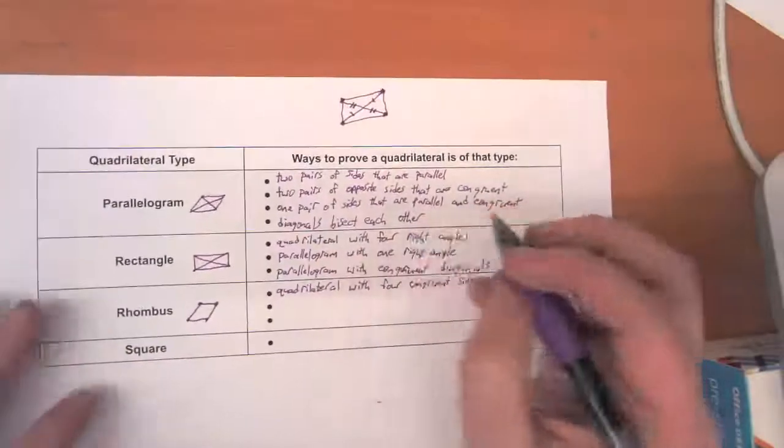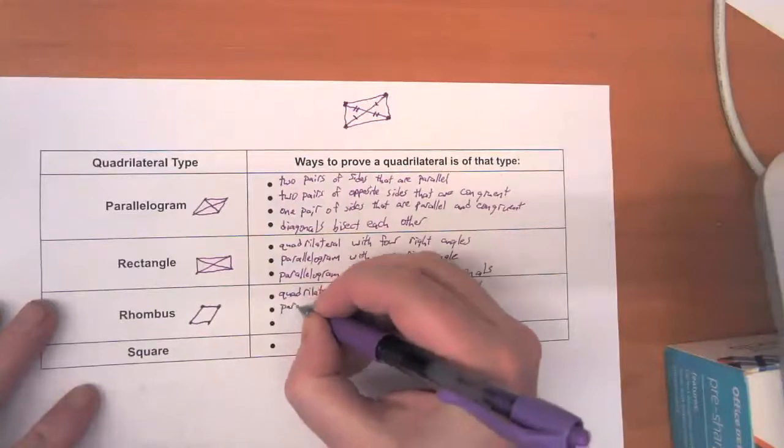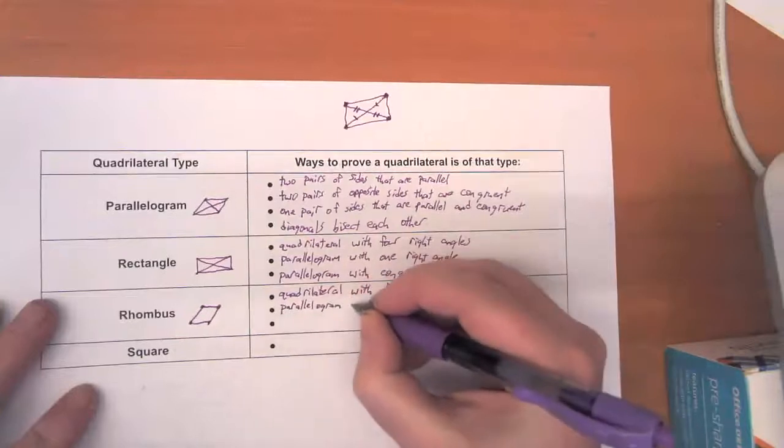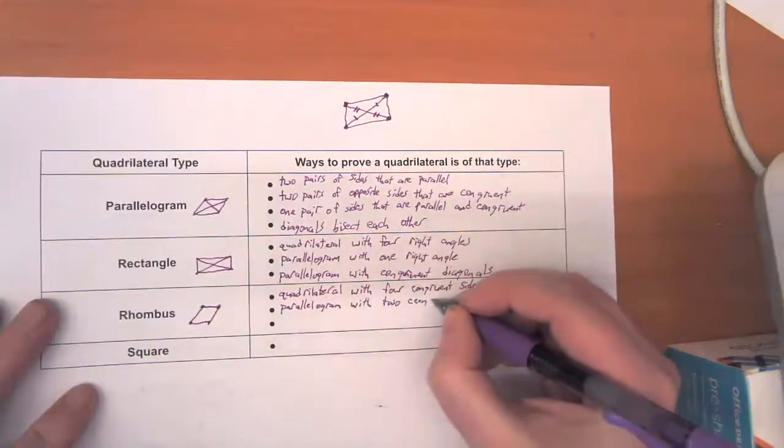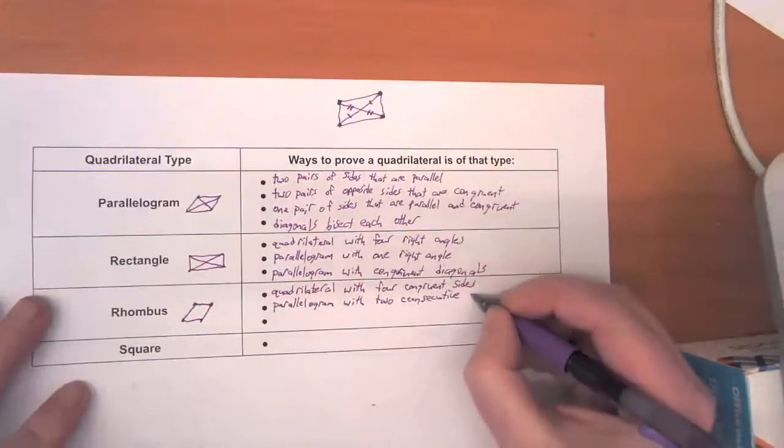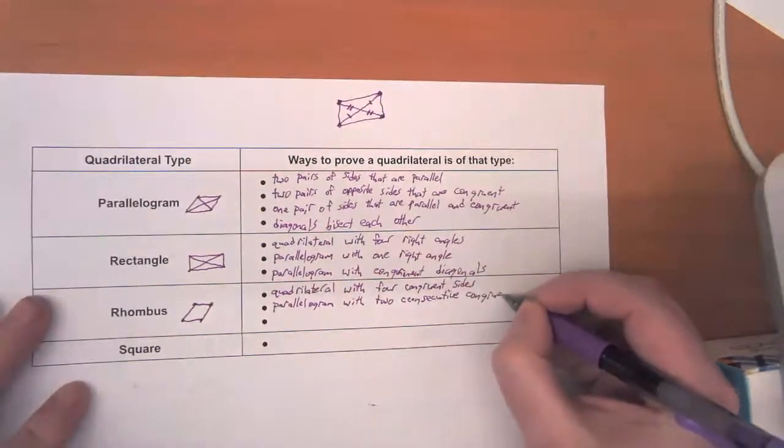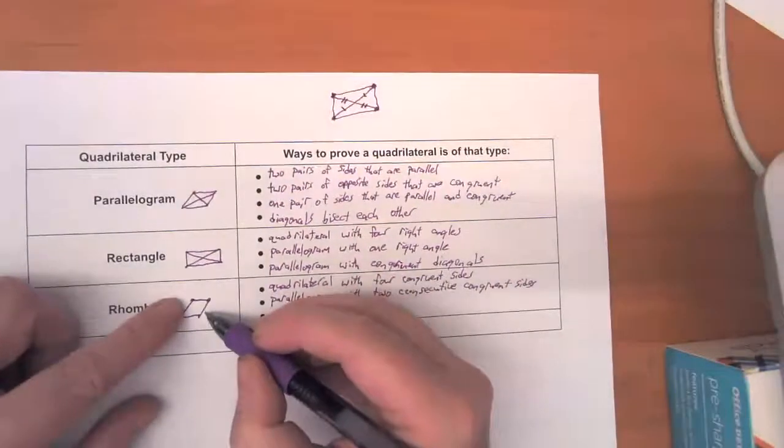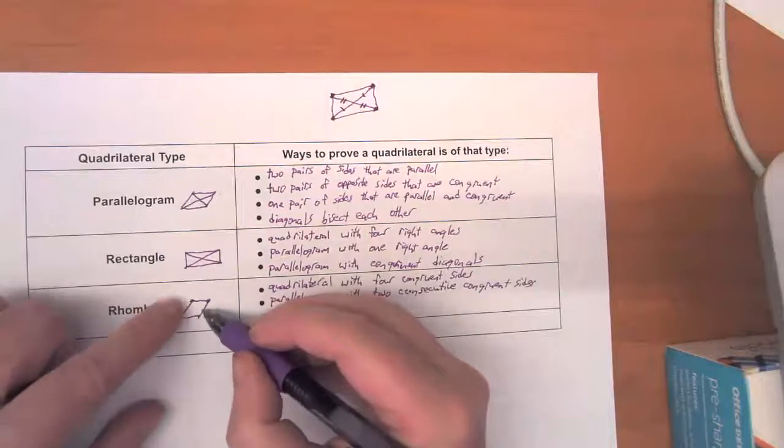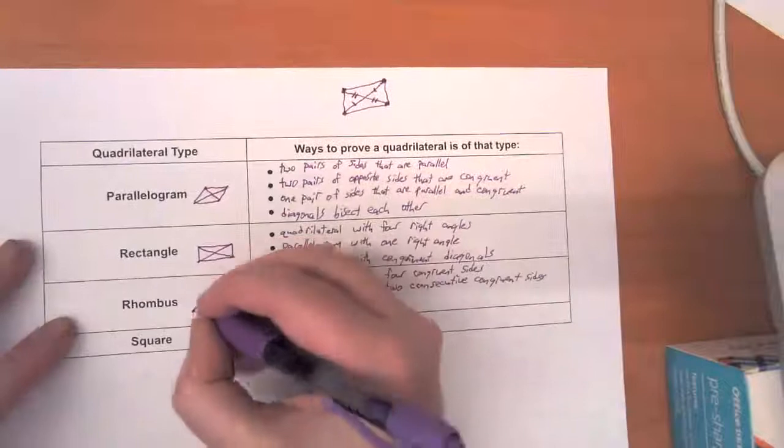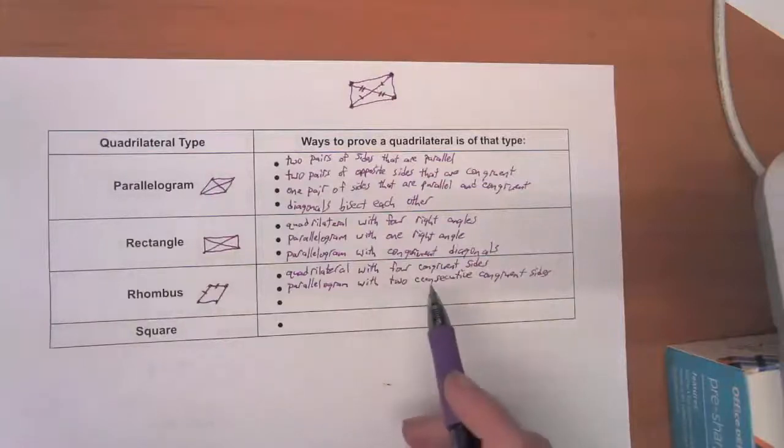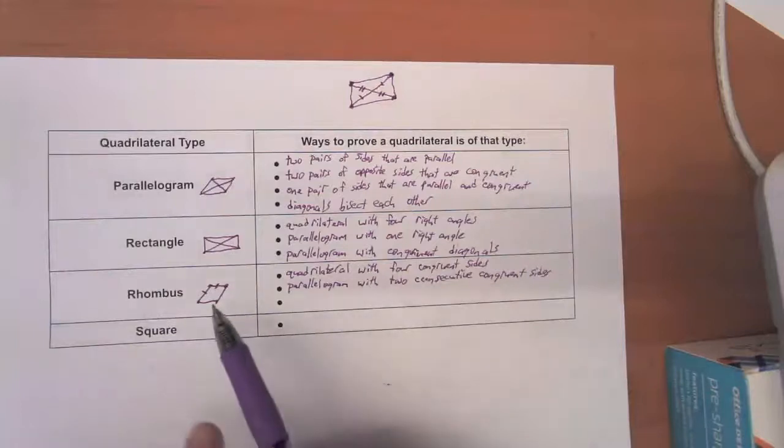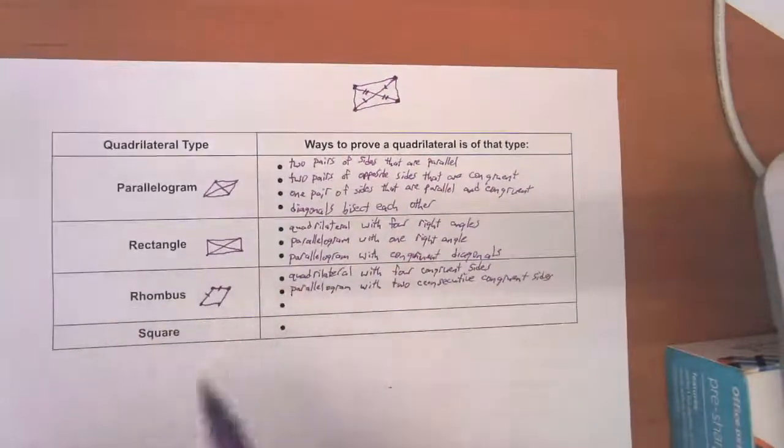And like with a rectangle, there's an extra rule that if we already know something is a parallelogram, we only need to know that there are two consecutive congruent sides. Remember, we already know that the opposite sides, I already know that these two sides are congruent, and these two sides are congruent to each other. So all I need to know is that this side is congruent to this side, and then I know that it's a rhombus. So I only need to check two sides of a parallelogram to make sure that it's a rhombus. If I don't know that it's a parallelogram though, if all I know is that it's a quadrilateral, I need to check all four sides.